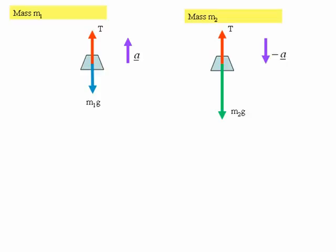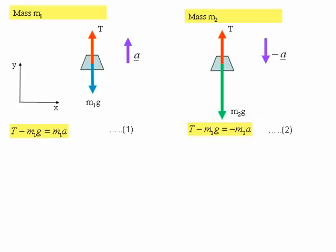The next stage is to write down our equations of motion. We only need to consider motion in the vertical direction here because there's no acceleration in the horizontal direction. So for mass m1, the equation of motion is T minus m1g equals m1a. The resultant force on m1 is just the tension minus the force of gravity, substituted into Newton's second law.